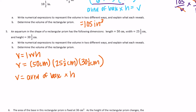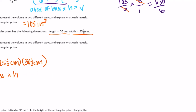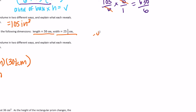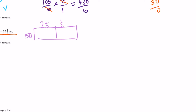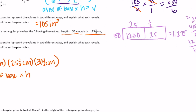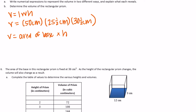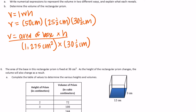For the second way, the base is length times width: 50 times 25 and a half. I'll use the box method because they're big numbers. 25 times 50 equals 1,250; and half of 50 is 25. Adding those gives 1,275 centimeters squared for the area of the base.